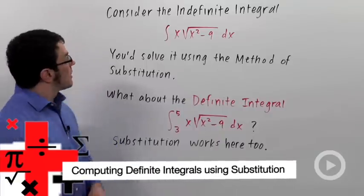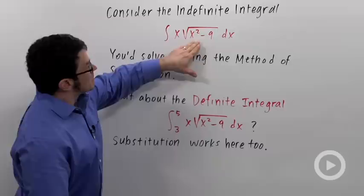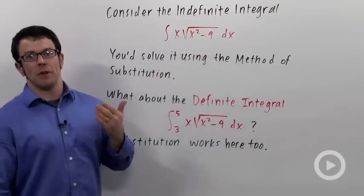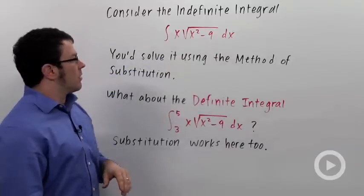Let's take a look at an integral problem. Consider the indefinite integral of x times the square root of x squared minus 9. Now you'd probably solve this using the method of substitution. You'd probably think substitute for the x squared minus 9 part.